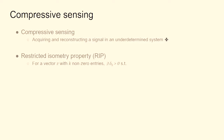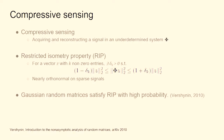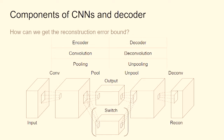One way to generate matrices that satisfy the RIP is to generate Gaussian random matrices — with high probability they'll satisfy RIP. We would like to argue that our deconvolution process — this part of our architecture — satisfies a certain kind of RIP. We would also like to argue that this part of our process is a fairly reasonable approximation for images.